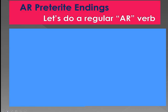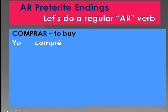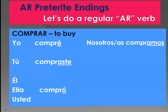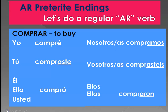Let's do a regular AR verb to practice. Comprar is to buy. Yo compré, tú compraste, él/usted compró, nosotros compramos, vosotros o vosotras comprasteis, ellos/ellas/ustedes compraron.